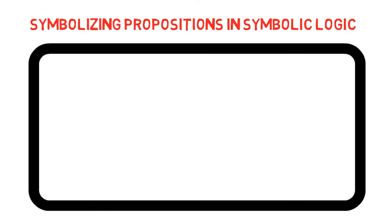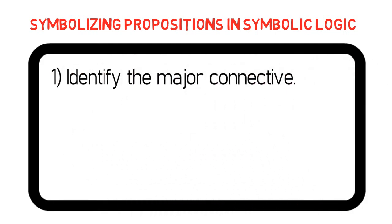Well, first, we need to identify the major connective in the proposition. This is because once we have identified the major connective, we will be able to punctuate the proposition properly. And this is exactly the reason why I discussed first the topic on punctuating propositions in symbolic logic in our previous edition.